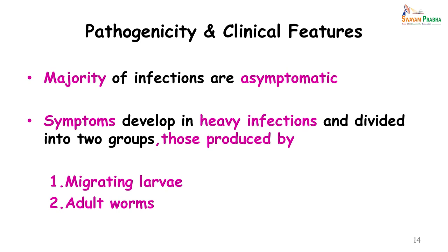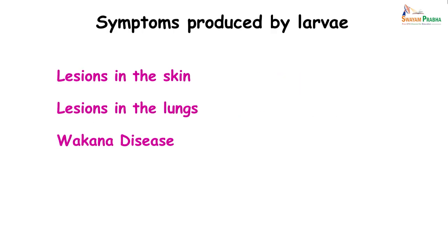Coming to pathogenicity and clinical features, the majority of infections are asymptomatic. However, in patients with heavy infections there can be symptoms due to the migrating larva or the adult worm. Since the adult worms are very small, they cannot cause obstruction. Symptoms produced by the larva include lesions in the skin, lesions in the lung, and Wakana disease, which is caused by ingested Ankylostoma duodenale larvae.